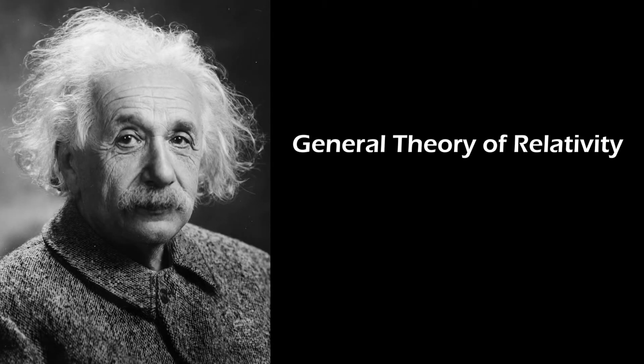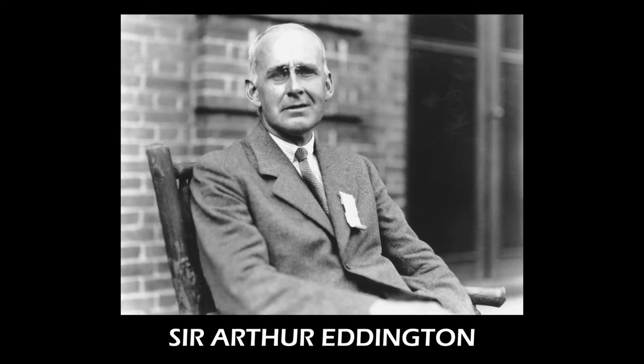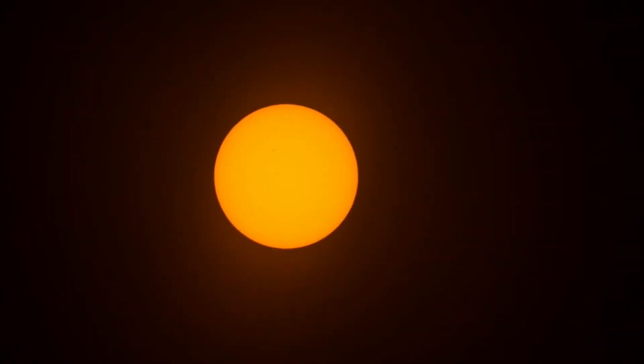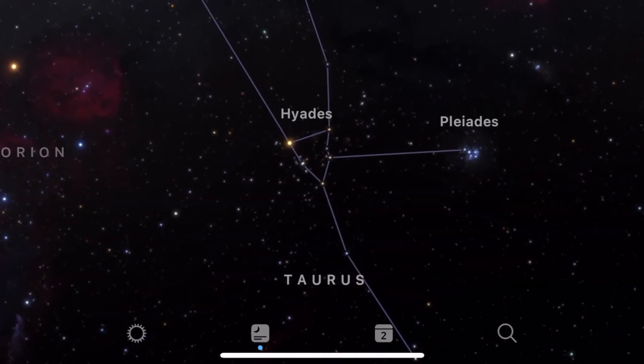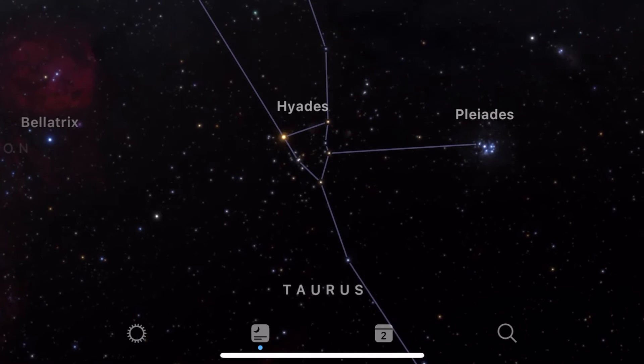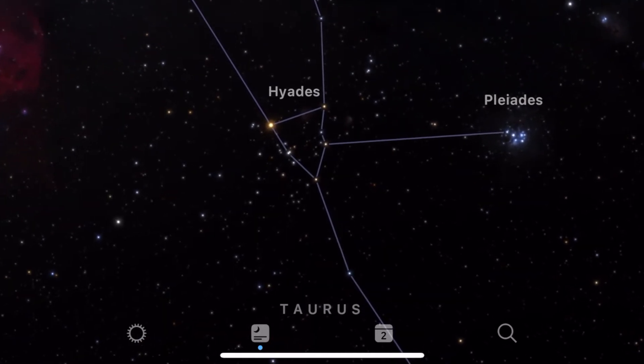This was one of the predictions of Einstein's general theory of relativity, published back in 1915. Soon after the First World War ended in 1919, English astronomer Sir Arthur Eddington set out on an expedition to test this prediction. During an especially long total solar eclipse in 1919, the Sun would sit in front of the Hyades cluster, meaning that at totality, many stars would be visible near the eclipse disk.